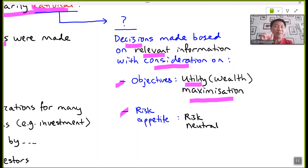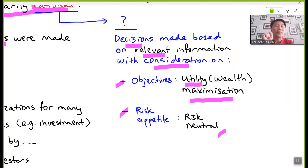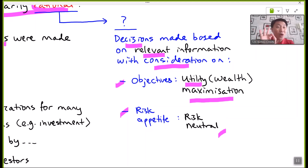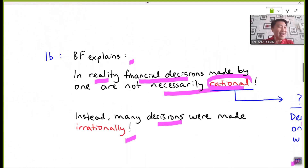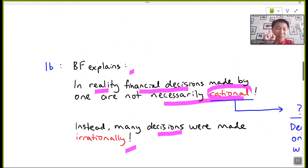Running a business involves encountering risk, so it is equally important to consider risk appetite. In the rational decision-making mindset, without additional evidence indicating riskiness of the outcome, one should behave in a risk-neutral manner. These are the three main conditions describing a rational decision maker. However, behavioral finance proves this may not be the case on many occasions.